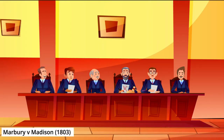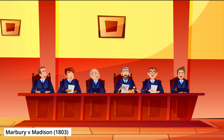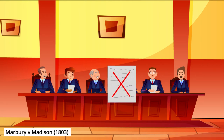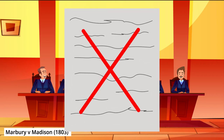However, Judicial Review was not firmly established until Marbury v. Madison in 1803, which was the first Supreme Court decision that struck down an act of Congress as unconstitutional. In the Marbury decision, Chief Justice John Marshall ruled that the Judiciary Act of 1789 was unconstitutional because it expanded the Supreme Court's original jurisdiction beyond what is specified in the Constitution.